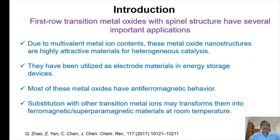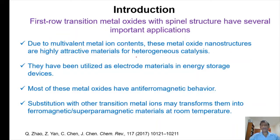Before explaining why we need to introduce nickel ions in these spinel structures, we first note that all these first-row transition metal oxides with spinel structure have several very important applications. Due to their multivalent metal ion contents, these metal oxide nanostructures are highly attractive materials for heterogeneous catalysis, and they have been utilized not only for catalysis but also for energy storage materials such as supercapacitors.